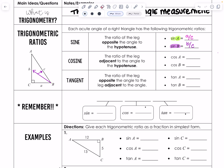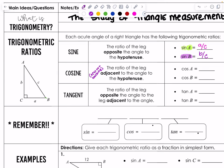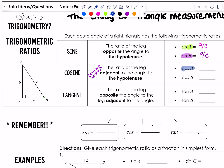The next major trigonometric function is cosine. Cosine's rule is the ratio of the leg adjacent to the angle over the hypotenuse. Remember that adjacent means next to and touching — it has to be the leg, not the hypotenuse. So cosine A is side B over C. And cosine B, the adjacent leg is A, over the hypotenuse C.